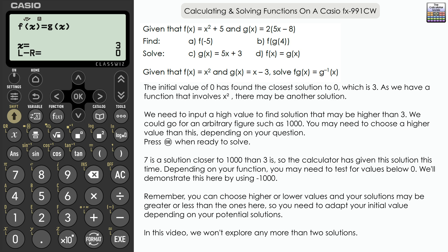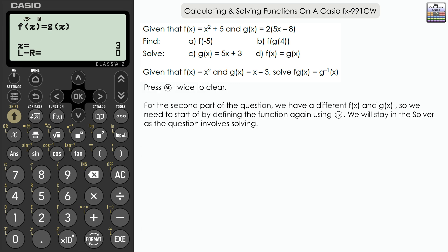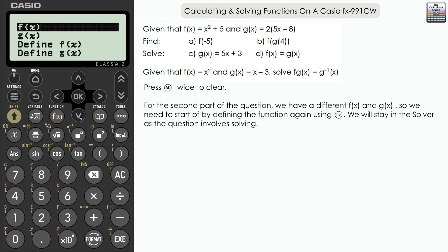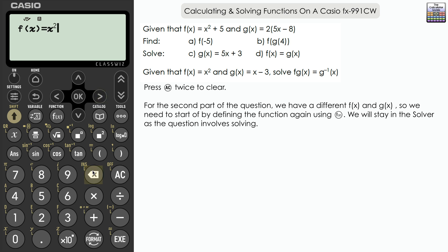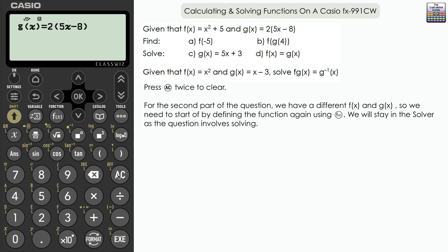The last question is an interesting one. We have different f(x) and g(x): f(x) equals x squared and g(x) equals x minus 3. We need to solve the composite function f of g(x) equals the inverse of g. Stay in the solver and redefine the functions. Press Function, define f(x), modify it to x squared by deleting the plus 5, and press Execute. Then define g(x) as x minus 3.